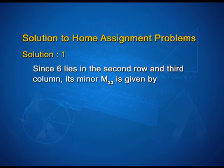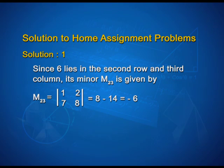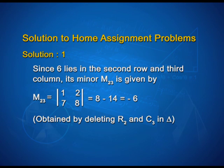Now let us look at the solution to the home assignment problems. First problem: since 6 lies in the second row and third column, its minor M_23 is given by the determinant of 1, 2, 7, 8, that is equal to 8 minus 14, which equals minus 6. This is obtained by deleting R2 and C3 in the given determinant.